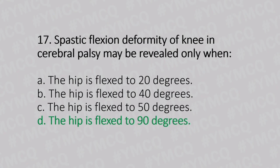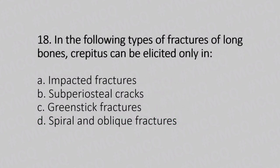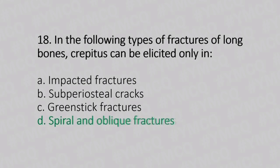Now let's move to question number 18. In the following types of fractures of long bones, crepitus can be elicited only in. Option A: impacted fractures. Option B: subperiosteal cracks. Option C: greenstick fracture. Option D: spiral and oblique fractures. And the answer is Option D, spiral and oblique fractures.